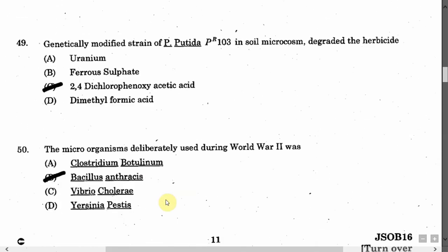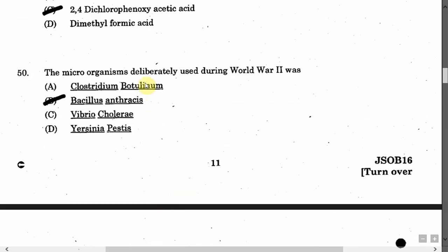The next question is: The microorganism deliberately used during World War II was — Option A: Clostridium botulinum. Option B: Bacillus anthracis. Option C: Vibrio cholerae. Option D: Yersinia pestis. The correct answer is Option B, that is Bacillus anthracis.